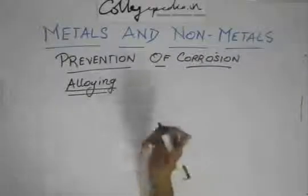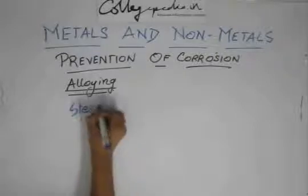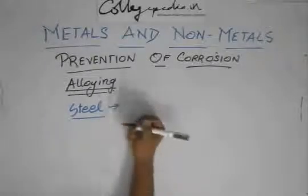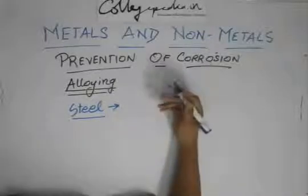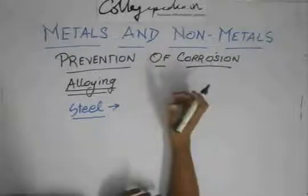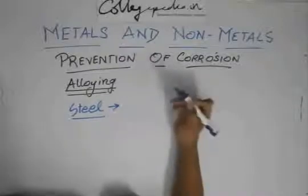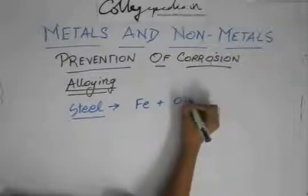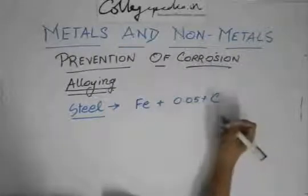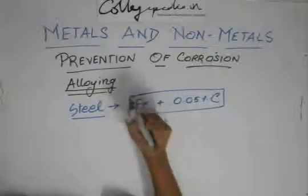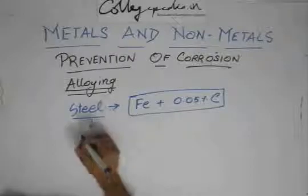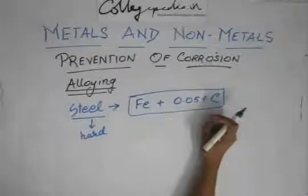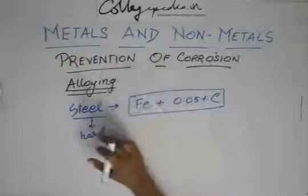An example of an alloy is steel. Pure iron in its pure form is very soft — it breaks and bends very easily, so you can't use it to make objects. What we do is add around 0.05% carbon to that iron. This mixture gives us steel, which becomes extremely hard. Just by adding that small amount of carbon, a soft substance changes into an extremely hard substance.